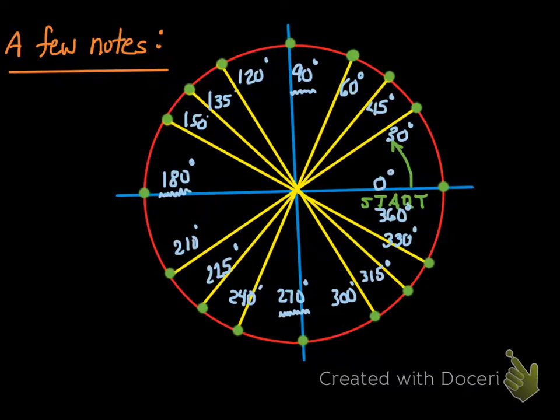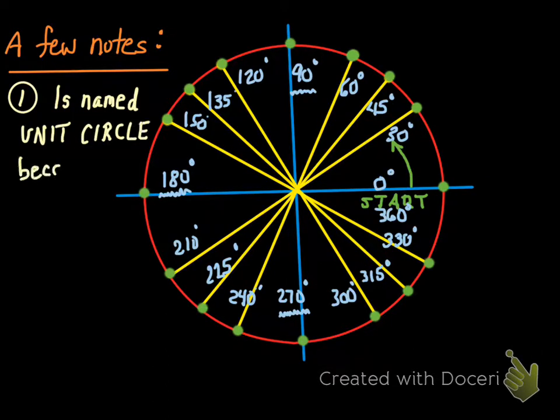A few notes here to pay attention to. Number one: this thing is named a unit circle for a reason - because it has a radius of one unit. The unit circle has a radius of one unit.